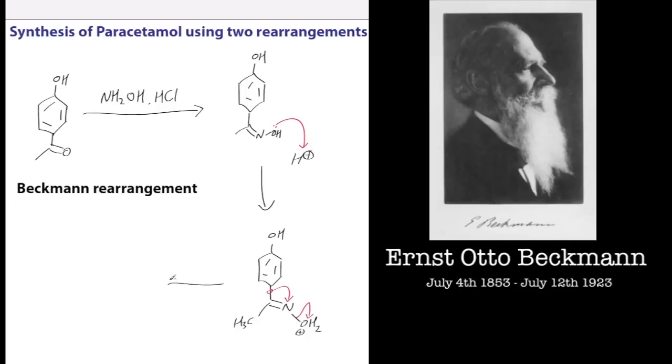It's going to be the transoid form that will migrate, so the phenol group will migrate - it has greater migratory aptitude because of the electron density around that carbon atom. We've lost water and we get this nitrilium ion.